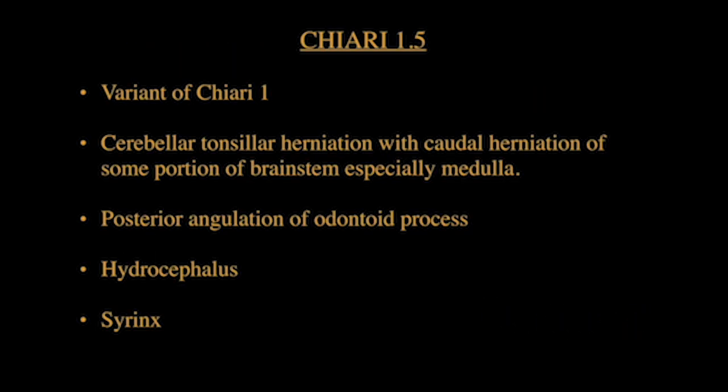Chiari 1.5 is considered a variant of Chiari 1 malformation where the caudal migration of the brainstem, especially the medulla, along with cerebellar tonsillar herniation is considered characteristic. Posterior angulation of the odontoid process can also be seen.